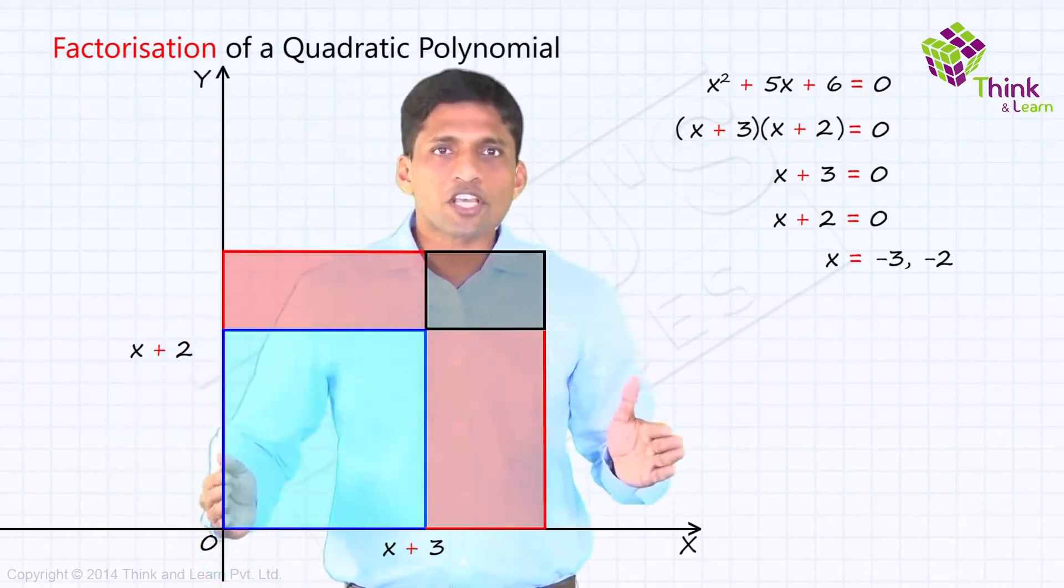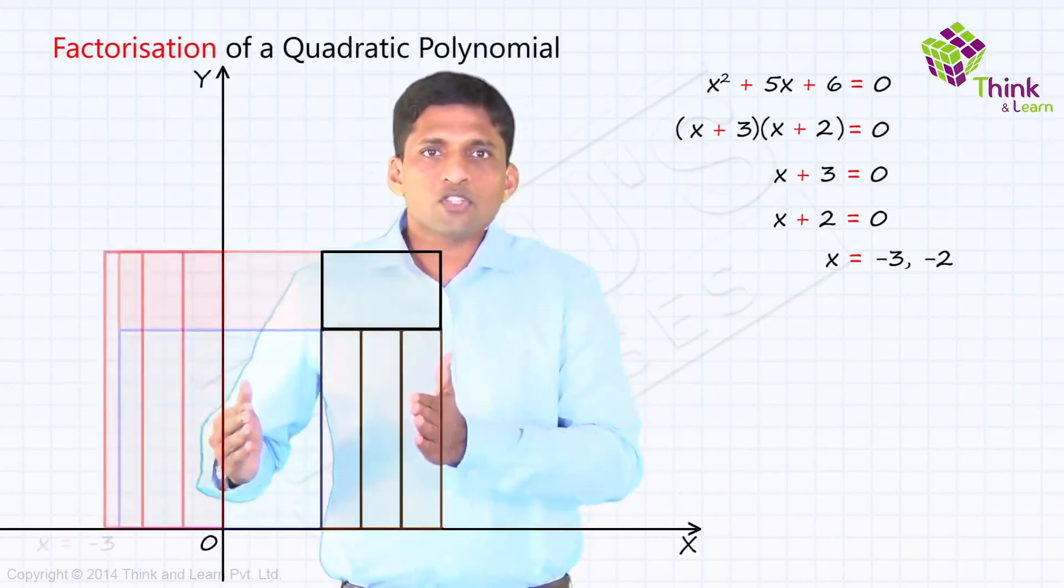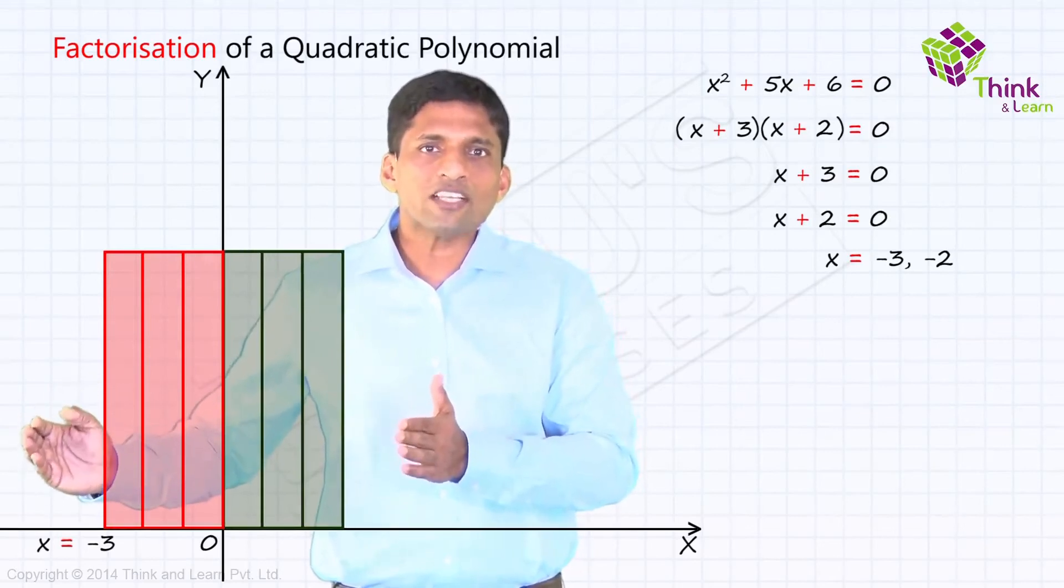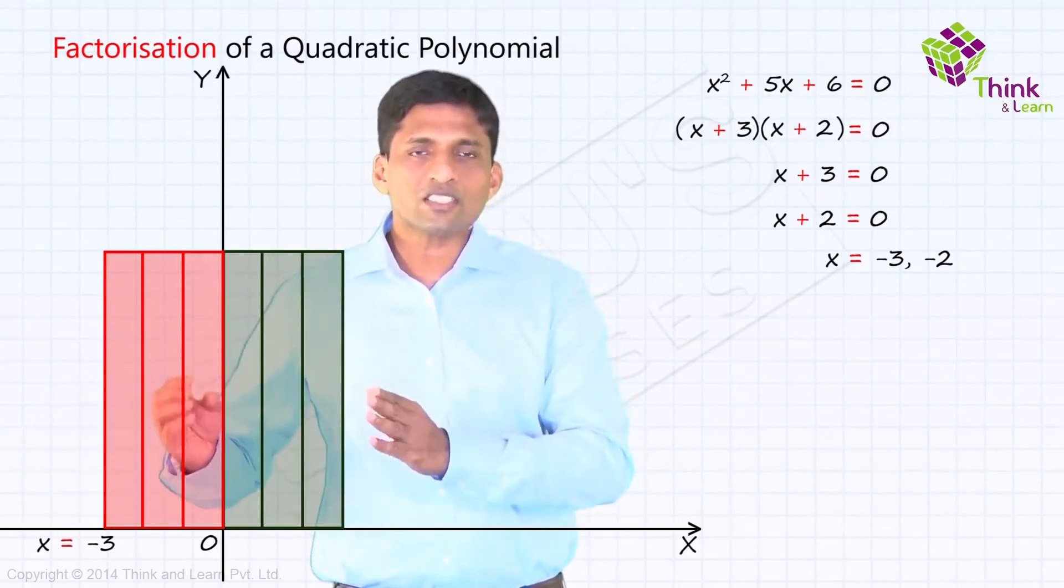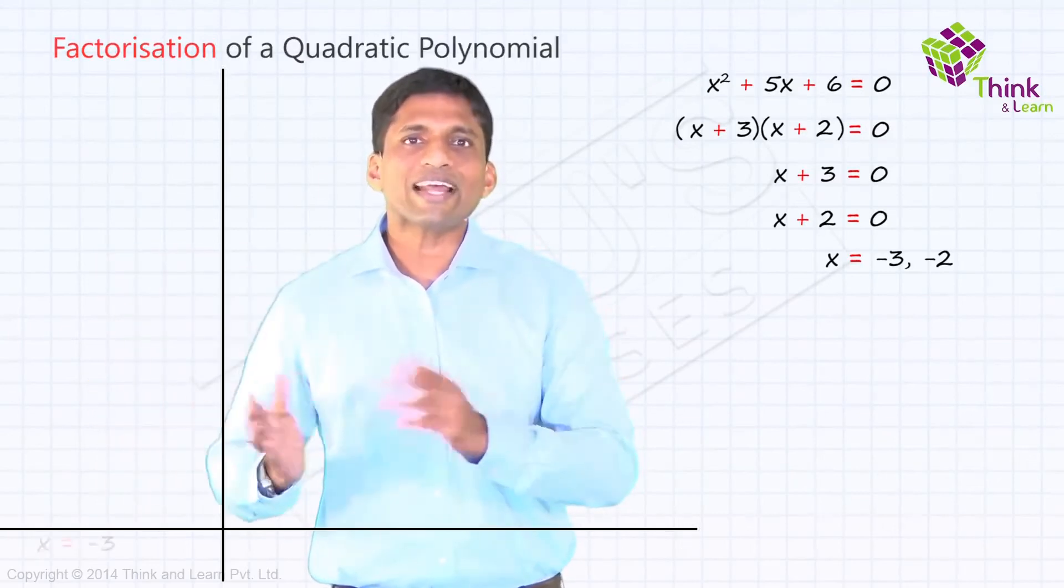Assume that y-axis is here. So if I start pushing this to the left, this will start becoming negative. So when x is at minus 3, when x is minus 3, these two areas, that is what is there in red and what is there in green, will get cancelled out and the rectangle will disappear.